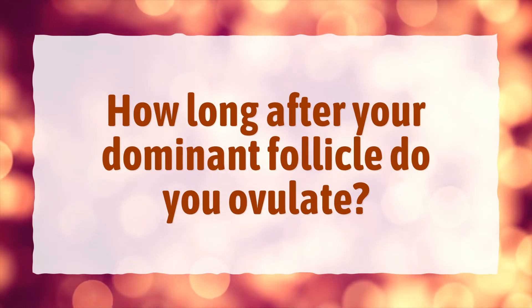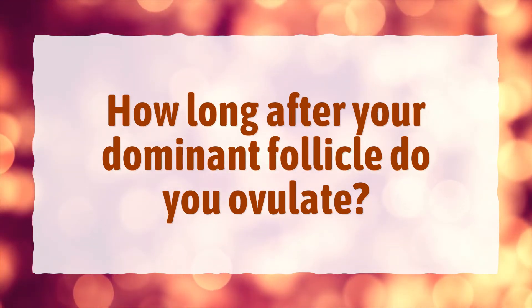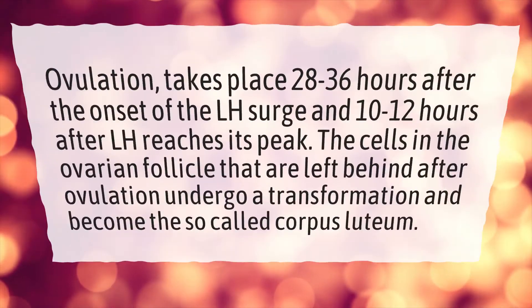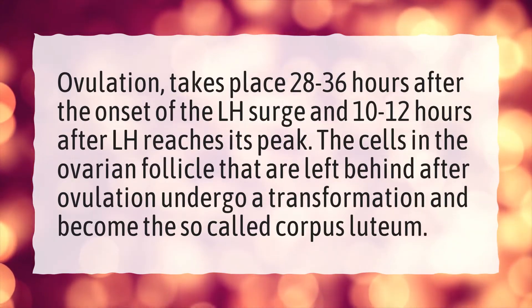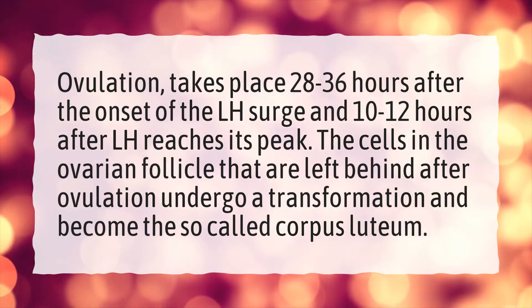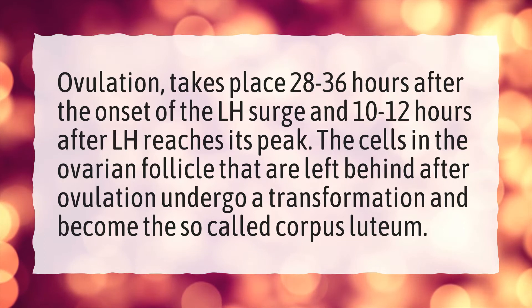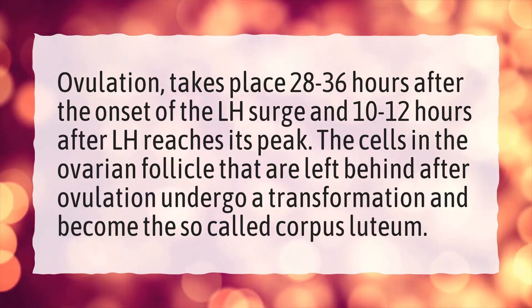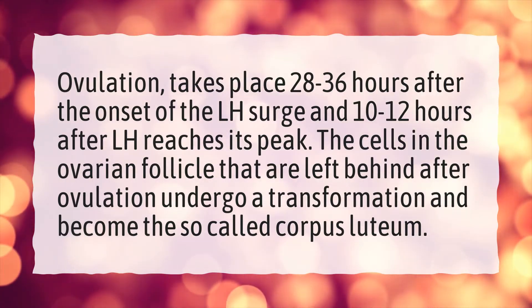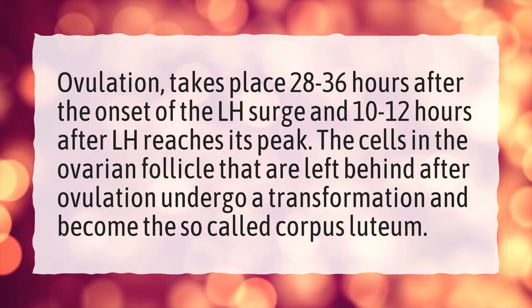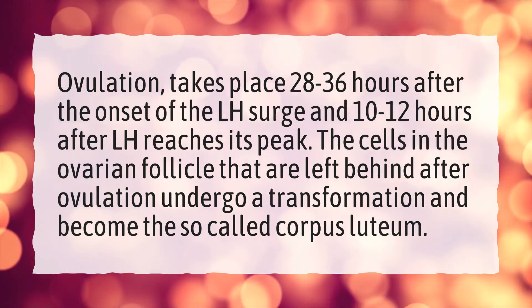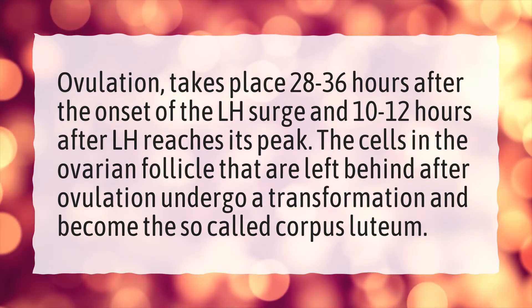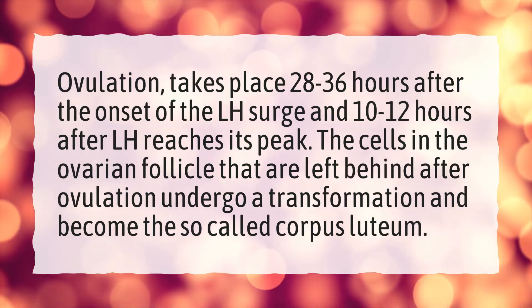How long after your dominant follicle do you ovulate? Ovulation takes place 28 to 36 hours after the onset of the LH surge and 10 to 12 hours after LH reaches its peak. The cells in the ovarian follicle that are left behind after ovulation undergo a transformation and become the so-called corpus luteum.